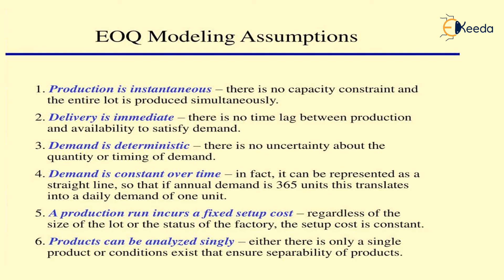Demand is deterministic — there is no uncertainty about the quantity or timing of demand. The demand is completely known and constant over time. In fact, it can be represented as a straight line, so that if annual demand is 365 units, this translates into a daily demand of one unit. Finally, a production run incurs a fixed setup cost regardless of the size of the lot or the status of the factory — the setup cost is constant.